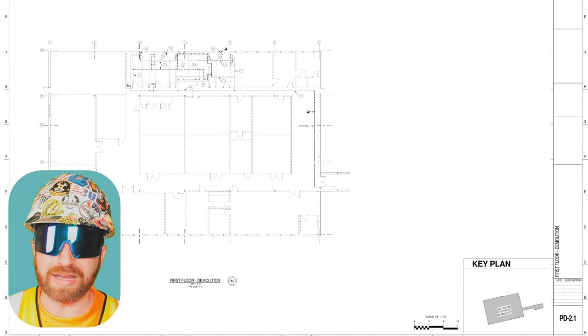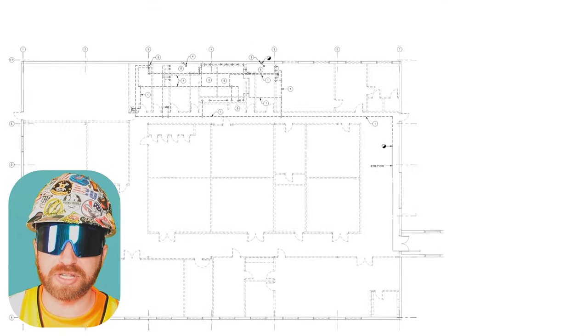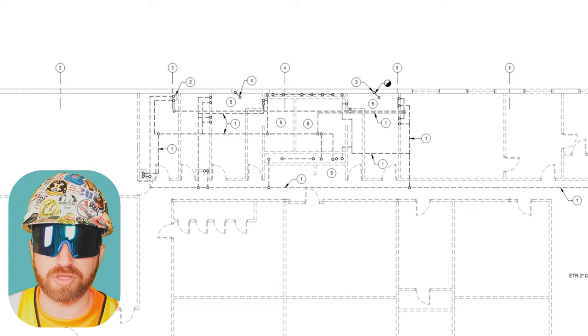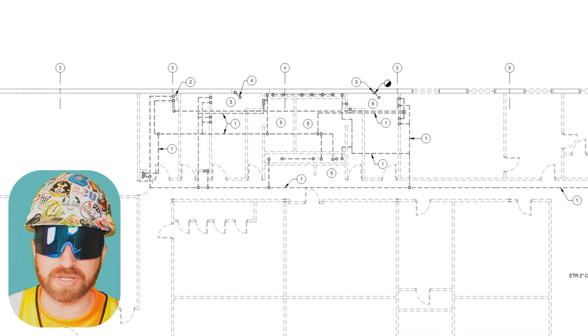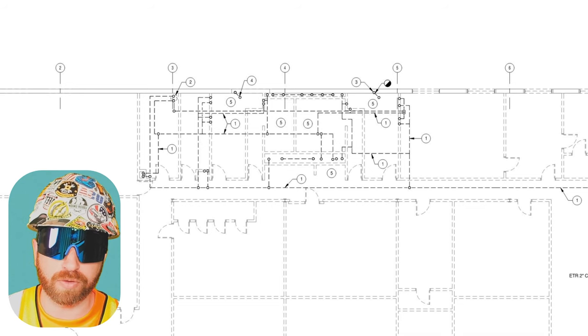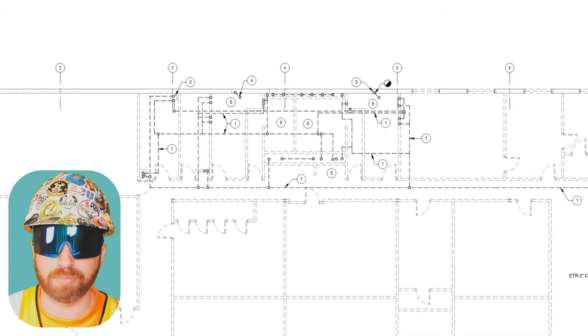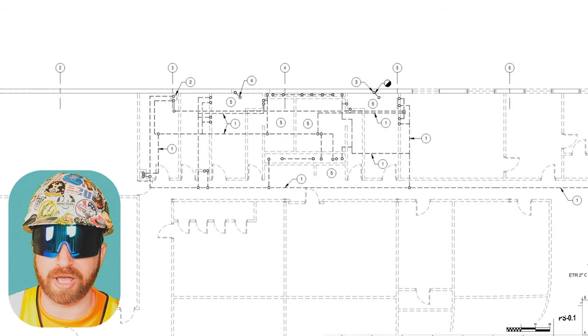We're going to skip over PD-2.1, which is just a continuation of your piping demolition. The only difference is the first page was everything below the floor slab, and PD-2.1 was everything above the floor slab.